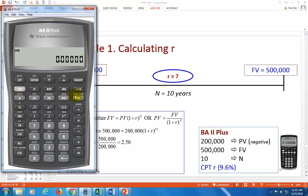Let's clear the screen. Second, clear TVM. Second, clear work. So you put in the values as you have them. $200,000 with a negative is your PV. Half a million dollars is your future value. 10 is the investment period. And all you've got to do is compute I. And that's it, 9.6%.